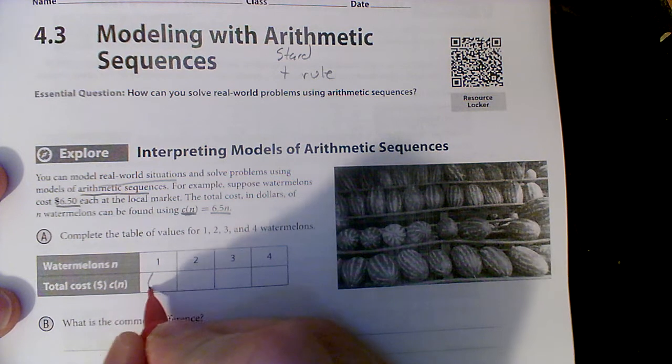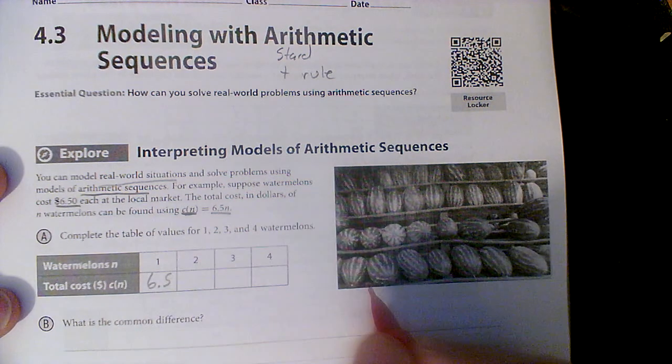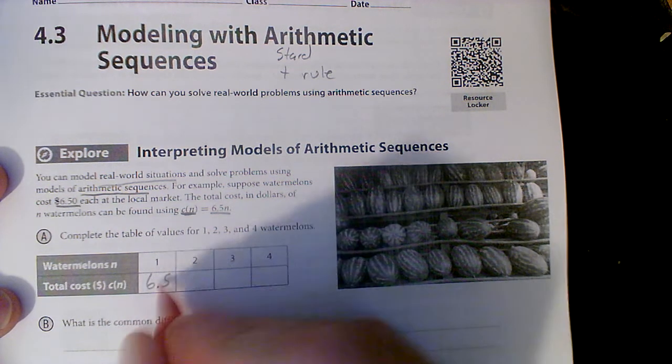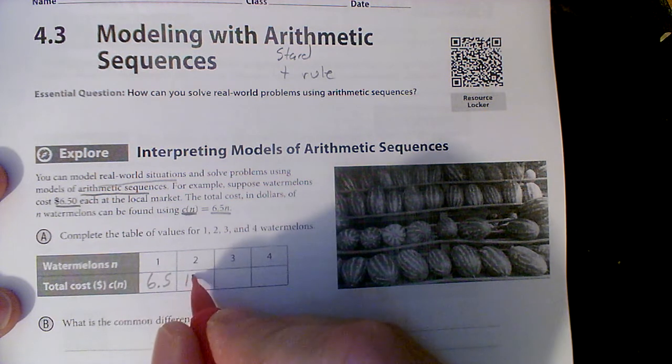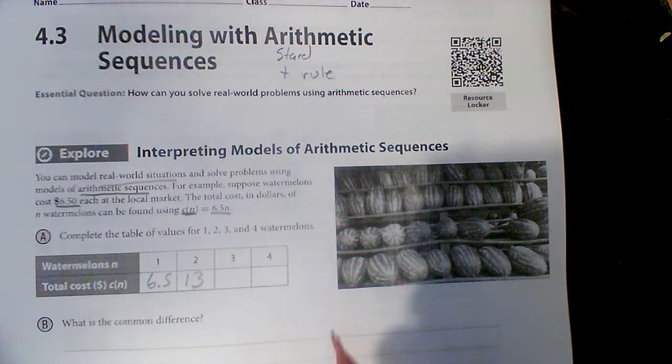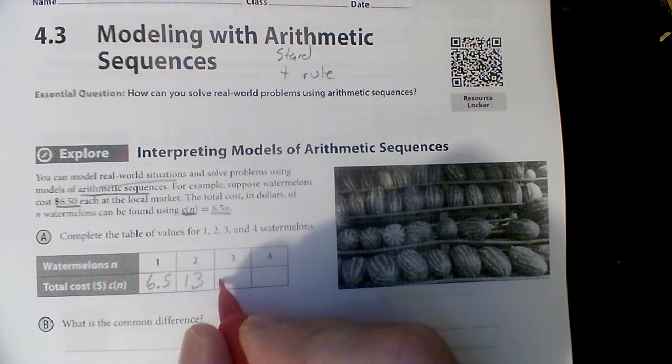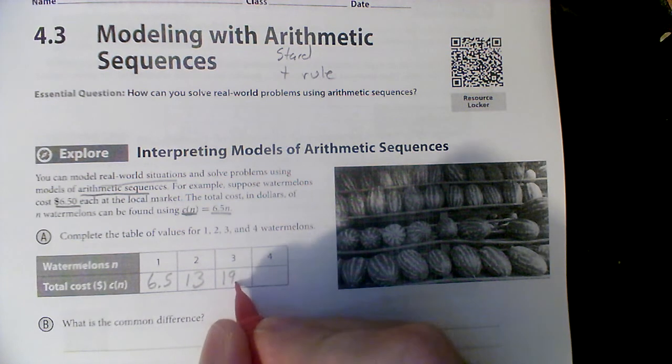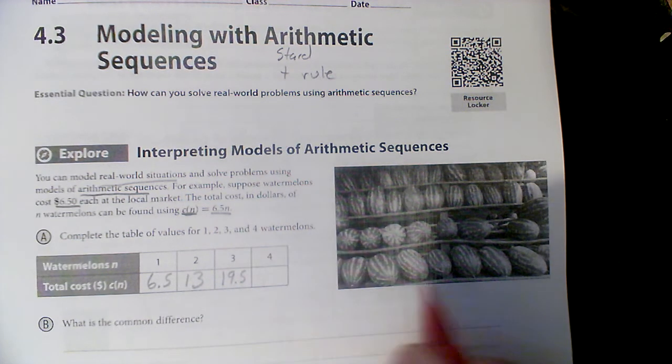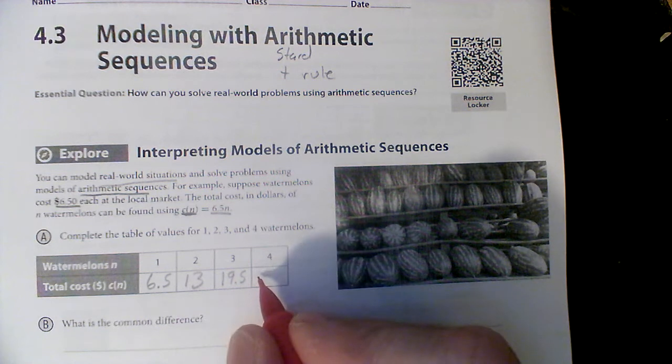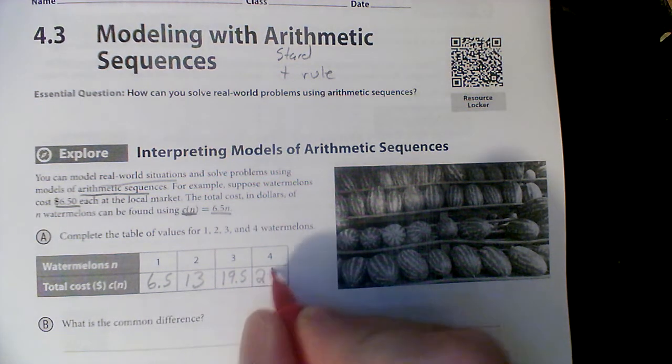So, one would be six dollars and fifty cents. Two would be twice six dollars and fifty cents or thirteen dollars. Three would be three times six dollars and fifty cents or nineteen dollars and fifty cents. And four would be twenty-six dollars.